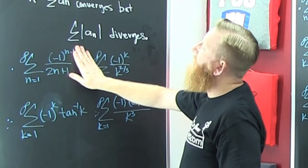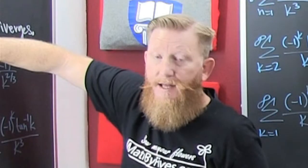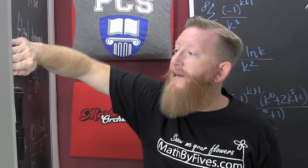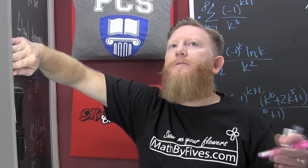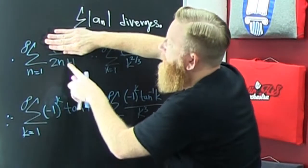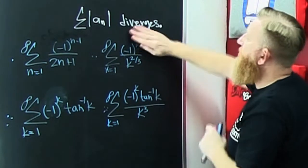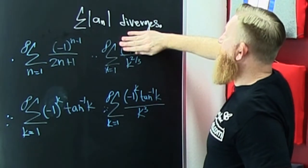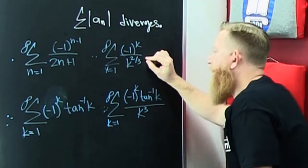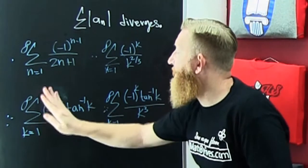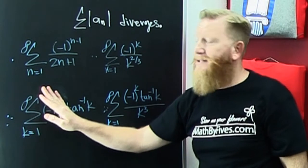So if the absolute value of the sequence diverges and the series converges, then it converges on the condition that it's alternating. So on something like this, you're going to want to check whether or not the absolute value converges, because if the absolute value converges then the series converges — that's what absolute convergence in the last section was. So if you take the alternating part off — is this going to converge? Probably not — that's a divergent p-series. Does that one converge? Probably not, because that is also a divergent p-series.